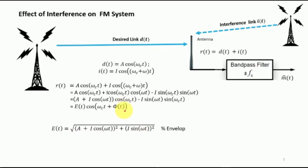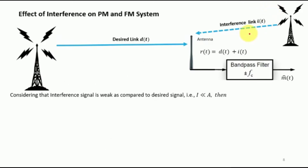Remember, this discussion points out the effect of interference on an FM system with a desired broadcast station and an interference broadcast station. Consider that you are in a region receiving a stronger signal from the desired broadcast station compared to a weak signal from the interference station — the desired station is near while the interference is far. Under such conditions the amplitude of interference i is much smaller than the amplitude of the desired signal A.